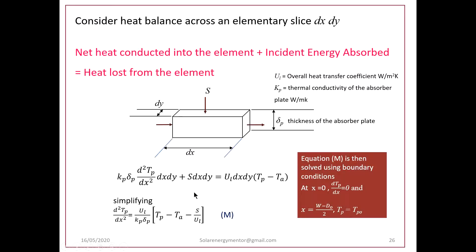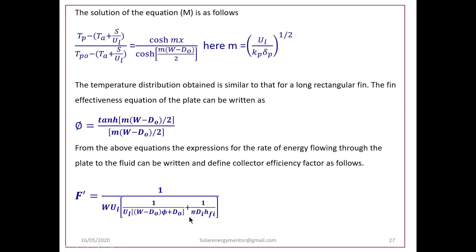Writing down the heat balance: k_p · δ_p · (d²T_p/dx²) · dx·dy is the conduction term, plus S · dx·dy for absorbed solar radiation, equals U_L · dx·dy · (T_p − T_a) for heat lost to ambient. Here k_p is the thermal conductivity of the absorber plate material in W/(m·K), U_L is the overall heat loss coefficient, and T_a is the ambient temperature. Simplifying gives: d²T_p/dx² = (U_L / (k_p · δ_p)) · [(T_p − T_a) − S/U_L].